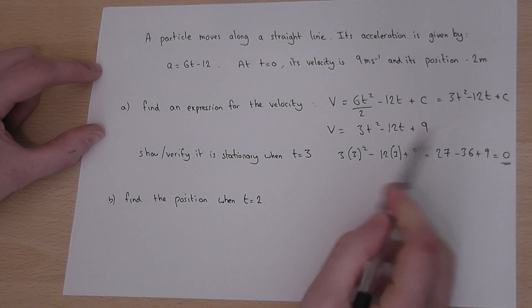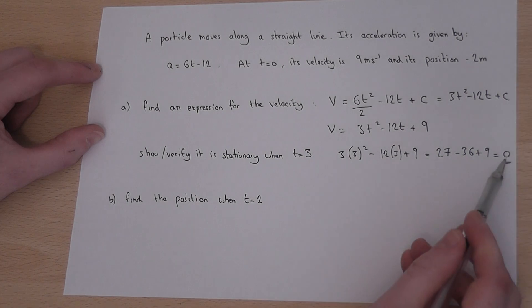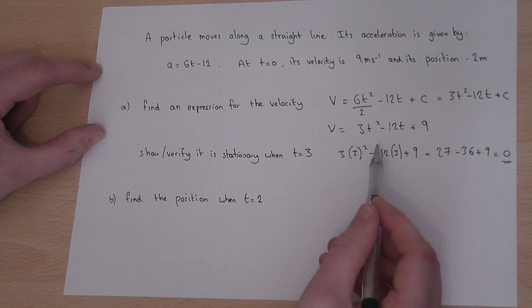So that verifies that when t is 3 the velocity is indeed 0. In other words, the particle is stationary.